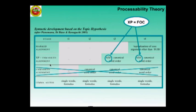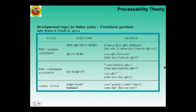But when the sentence does follow, you have an XP — in this case not an adjunct like in the declarative but the focal element, the focus. And then at the next stage learners produce grammatical sentences. The Italian outcome with foc plus unmarked alignment would give you the question constituent plus SVO: cosa Gabriele offre.